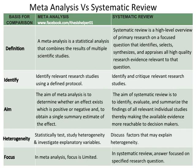The aim of meta-analysis is to determine whether an effect exists — which is positive or negative — and to obtain a single summary estimate of the effect. Whereas the aim of systematic review is to identify, evaluate, and summarize the findings of all relevant individual studies, thereby making the available evidence more reachable to decision makers.